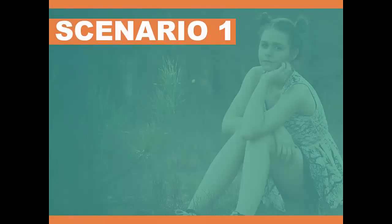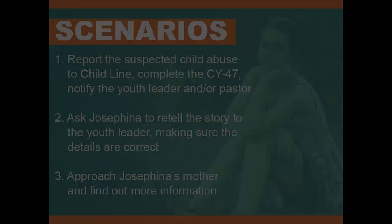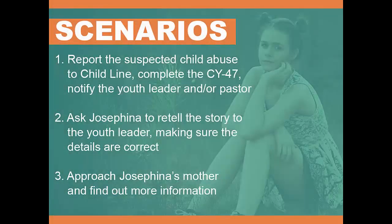Now let's review some real-life scenarios. Scenario 1: The youth volunteer leader at the church notices that Josefina is on the youth retreat and changing her clothes in a different location than everyone else. Previously, she had always stayed with the other girls, but now goes off by herself to change. When the volunteer youth leader asks her if everything is okay, Josefina starts to cry and shares that her uncle was sexually abusing her. What should the youth leader do? Option 1: The youth leader should make the report of suspected child abuse by immediately calling Childline and completing the CY47 report.